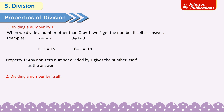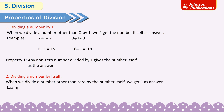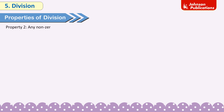Property 2: Dividing a number by itself. When we divide a number other than 0 by the number itself, we get 1 as the answer. Examples: 14 ÷ 14 = 1; 9 ÷ 9 = 1; 10 ÷ 10 = 1; 4 ÷ 4 = 1. Any non-zero number divided by itself gives 1 as the answer.